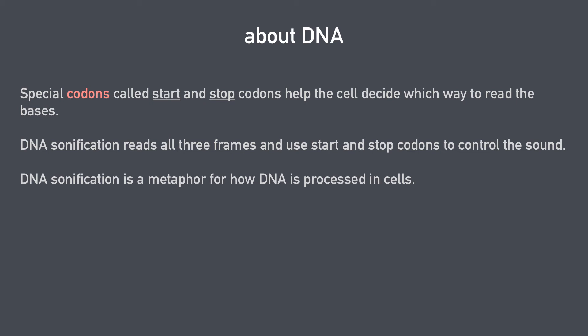The cell has special codons that indicate where to start and where to stop. Looking at those three reading frames, in maybe the second reading frame there might be a group of three letters that is a stop sequence, and that tells the cell to stop reading that reading frame. Another reading frame might have a start codon, and that tells the cell to start reading that reading frame.